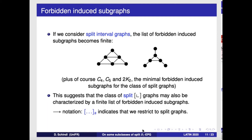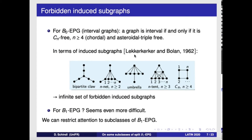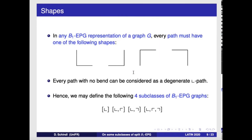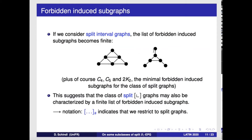But what if we restrict to split graphs? For interval graphs restricted to split graphs — split interval graphs — most of the forbidden induced subgraphs for interval graphs are not split graphs. So if we restrict to the class of split graphs, only two forbidden subgraphs remain. You also need to forbid C4, C5, and 2K2, which are the minimum forbidden induced subgraphs for split graphs. The situation is much simpler when restricted to split graphs.